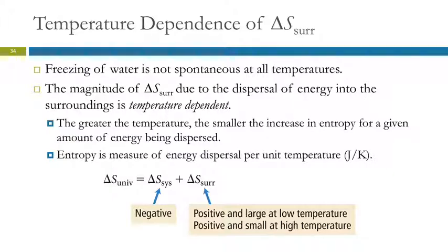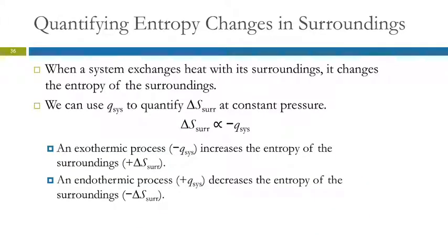When the system exchanges heat with its surroundings, it changes the entropy of the surroundings. We can use Q to quantify that change in entropy at constant pressure. Q for the system is the heat being gained or lost by the system. It's that heat being dispersed into the surroundings that causes the entropy of the surroundings to increase. So delta S surroundings is proportional to negative Q system. An exothermic process where we have a negative Q system will increase the entropy of the surroundings. An endothermic process that absorbs energy — taking energy out of the surroundings — will cause a decrease in entropy for the surroundings.